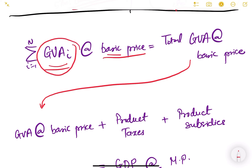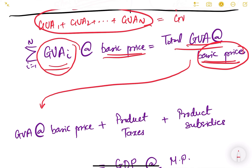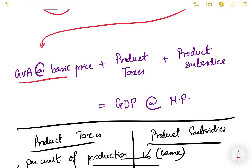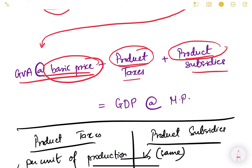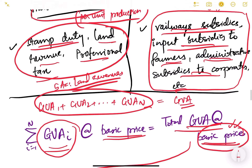When we sum all the GVA at basic prices across all firms in the economy — GVA₁ + GVA₂ + … + GVAₙ — we get the total GVA for the economy at basic prices. Then, when we add product taxes and subtract product subsidies, we get the GDP at market price. Product taxes are per unit of production — examples include VAT, GST, and excise duties. Product subsidies are also per unit of production — examples include food subsidies, petroleum subsidies, fertilizer subsidies, and interest subvention to farmers.